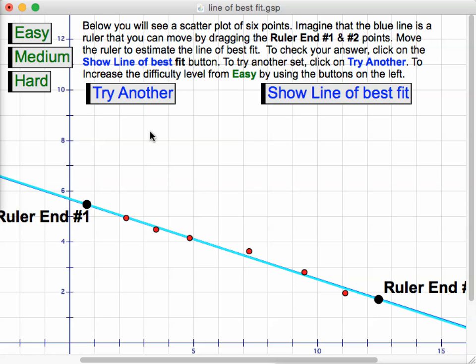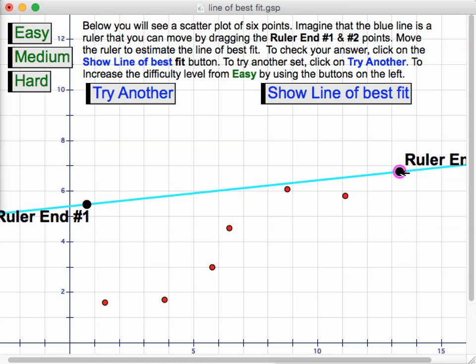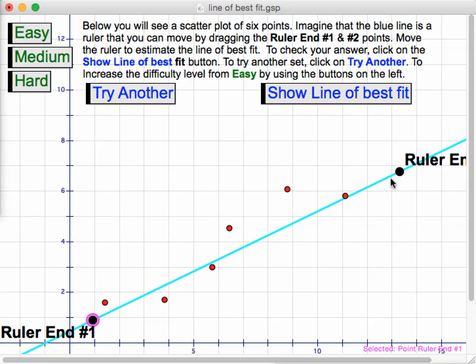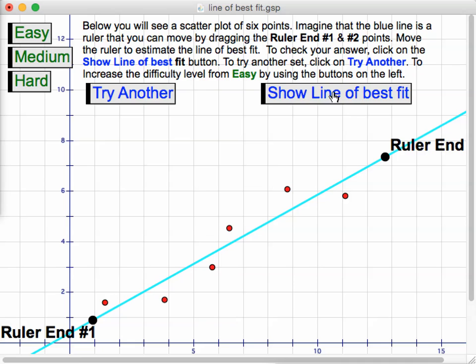Students can do this and they can make it easy, medium, which will spread those points out a little bit, and hard, spread them out a little bit more. When they spread them out a little bit more, they'll find that the line of best fit that they choose will be harder to get right on the real thing.